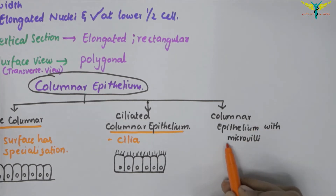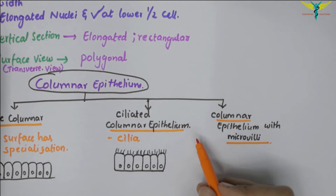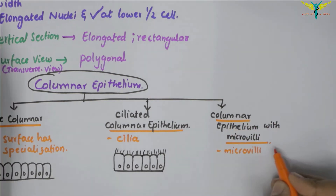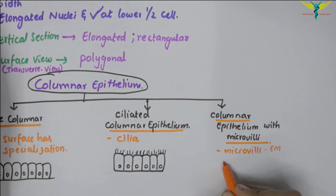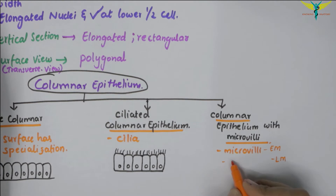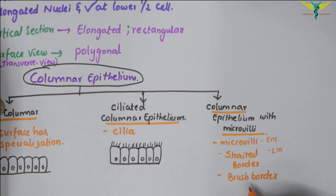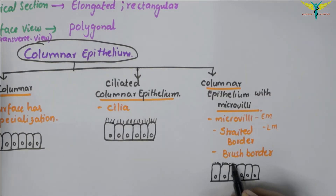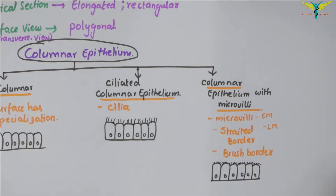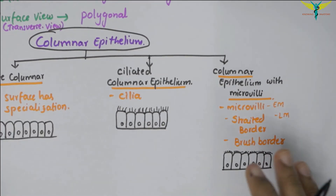There is another type: the columnar epithelium with microvilli. The basement membrane and cilia are visible in the ciliated type. In the columnar epithelium with microvilli, the surface is covered with microvilli. In the electron microscope they are seen as a striated border, or in the light microscope they may appear as a brush border, which is the term used when microvilli are irregularly placed.